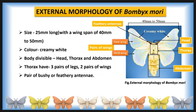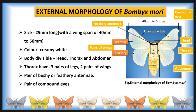The head possesses a pair of bushy or feathery antennae. In the female, the antennae are smaller than in the male. The head also possesses a pair of compound eyes.